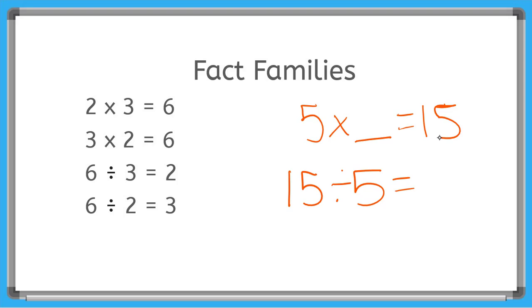Well, our number here is going to be the number we can fill in the blank up at the top. So 15 divided by 5 I know equals 3. So if I know that, then I know 5 times 3 is equal to 15.